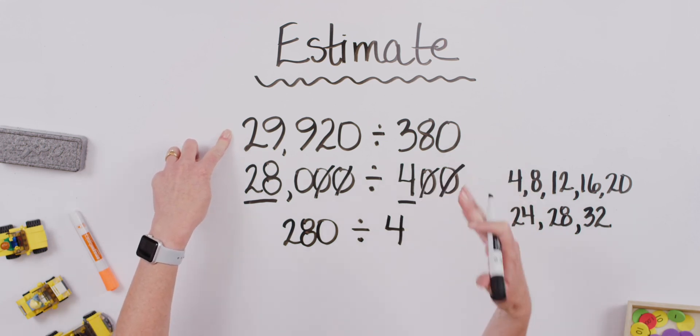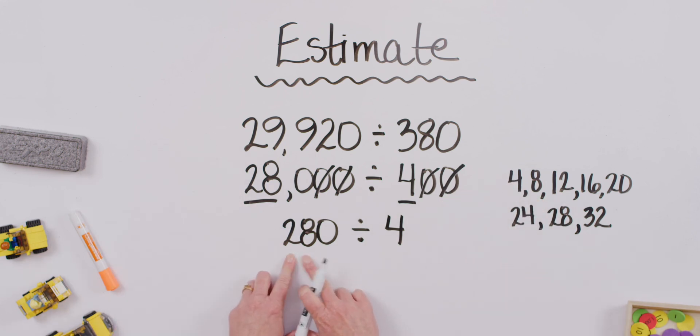Doesn't that feel better? Now, again, we're looking for an estimate. We're not going to get the exact answer, but we're looking for an estimate. So, 280 divided by 4. Can you think of what 28 divided by 4 is? Great. 7. But we can't forget our zero. 70, because it's not 28 ones, but it's 28 hundreds divided by 4. So, it ends up giving us 70.